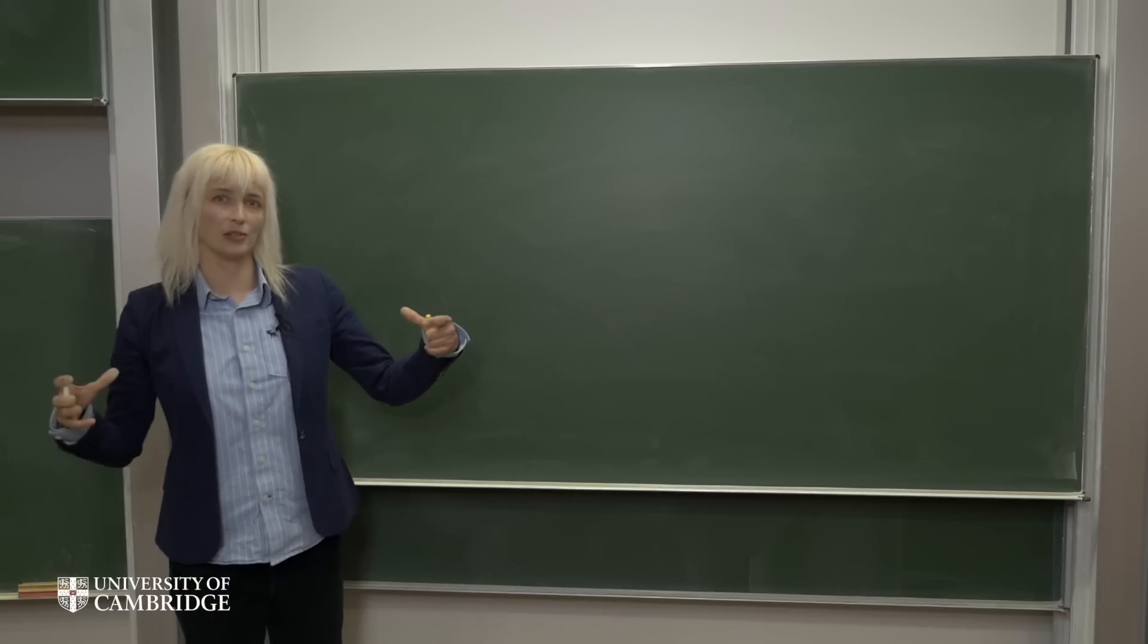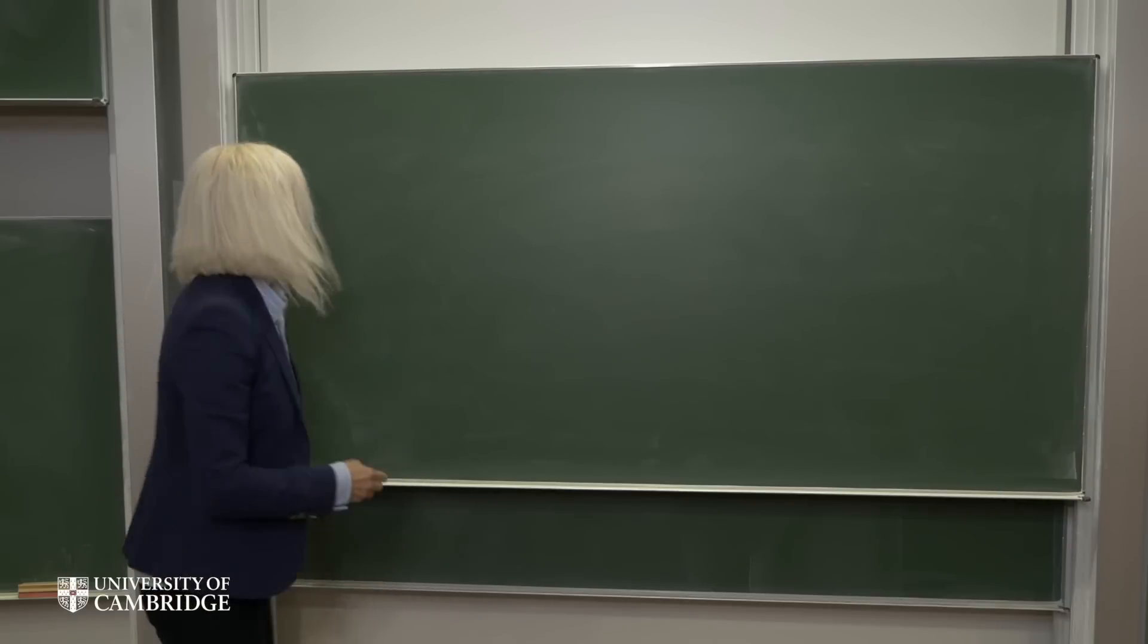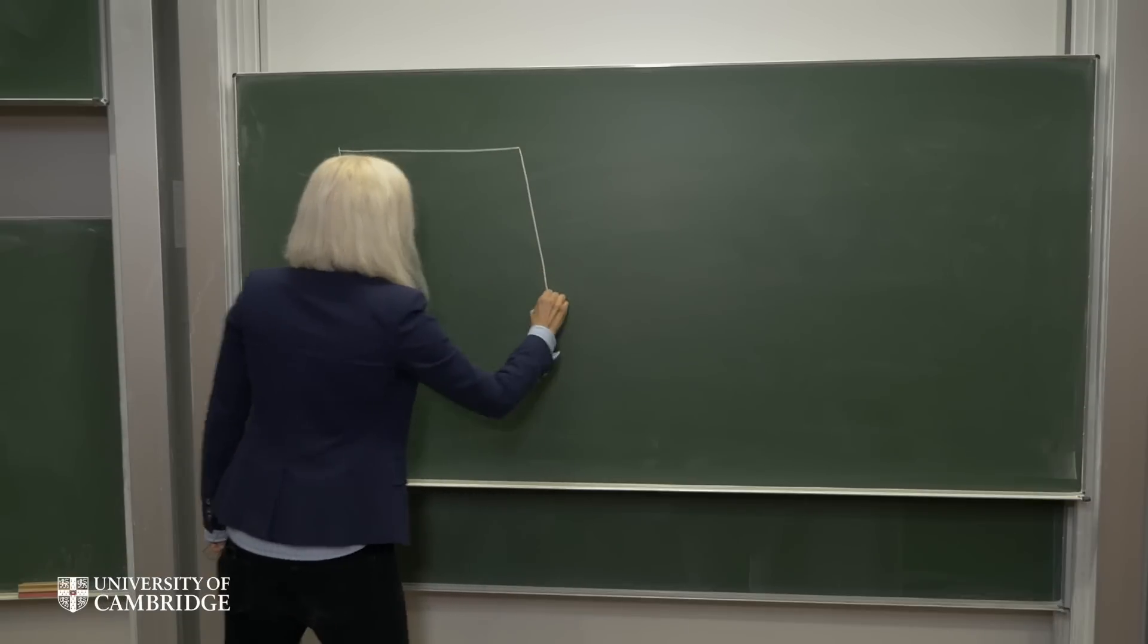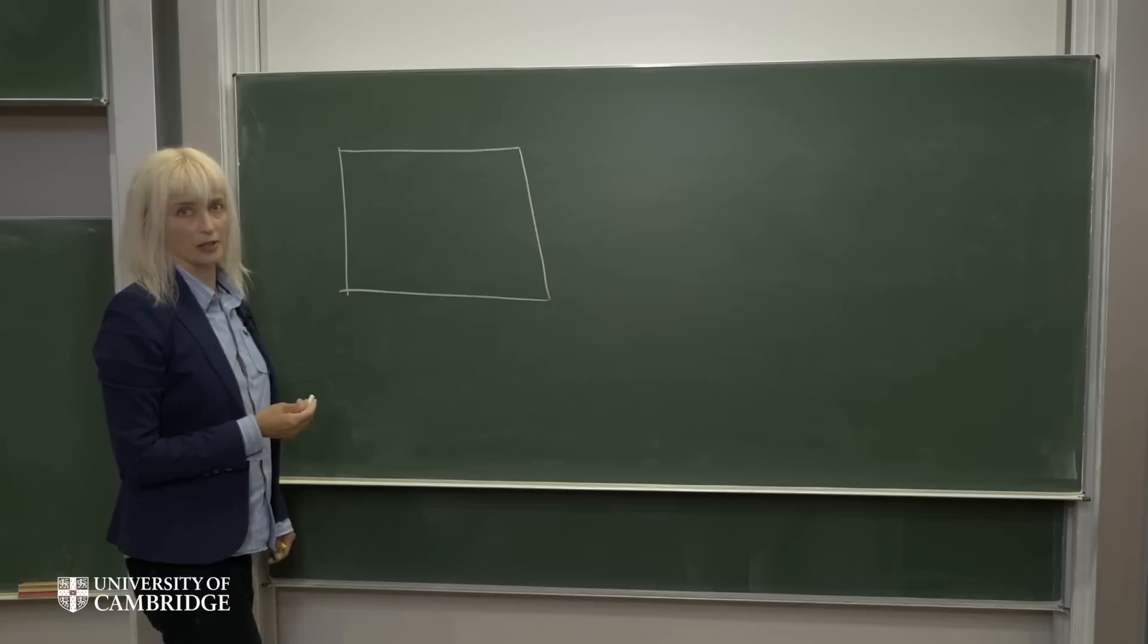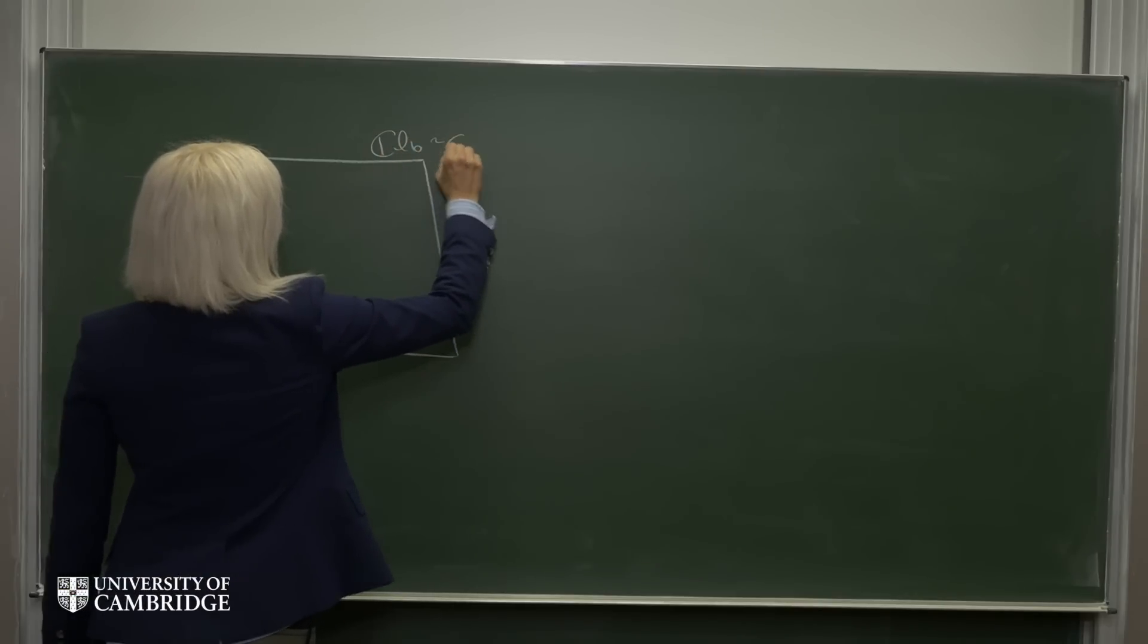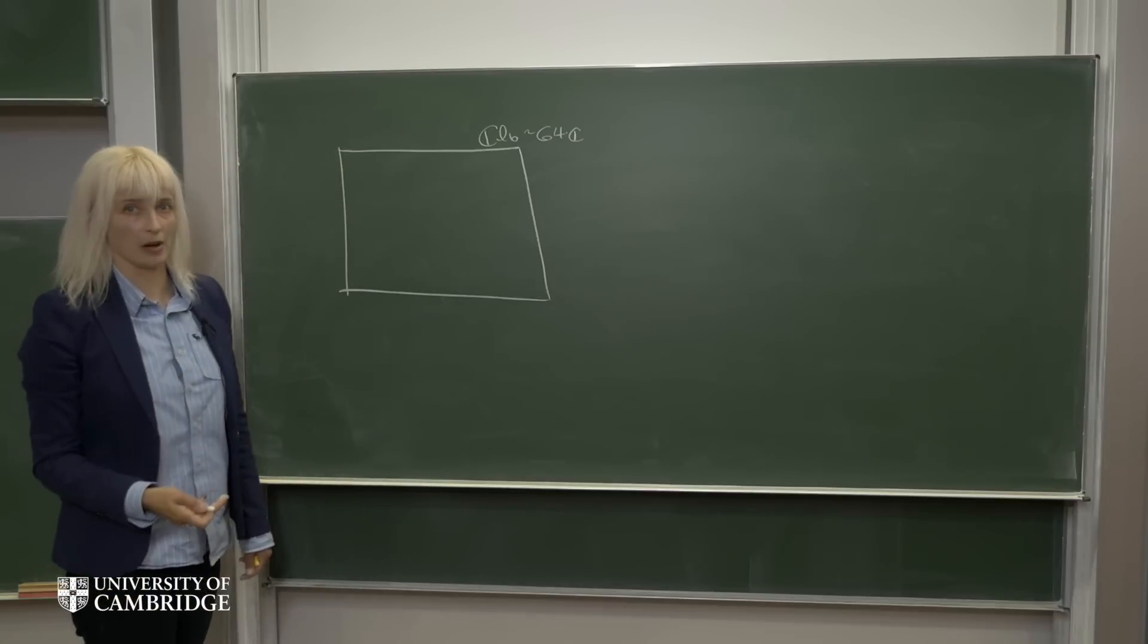So you might wonder, is there a better way to use up all of the space of this Clifford Algebra CL6? So here's our Clifford Algebra CL6 which is 64-complex-dimensional. This is generated by the complex octonions.